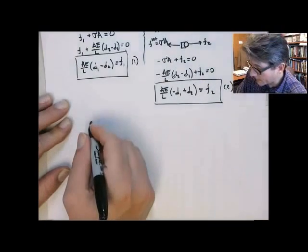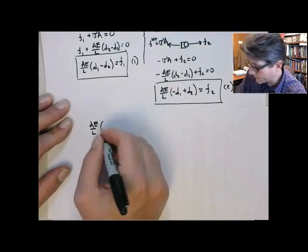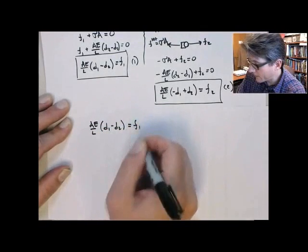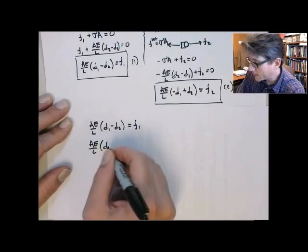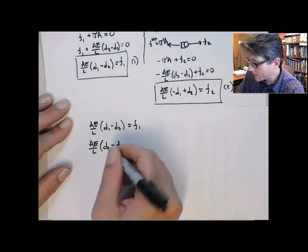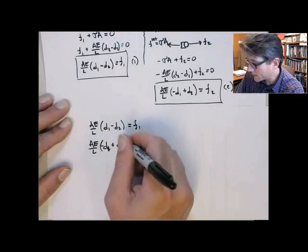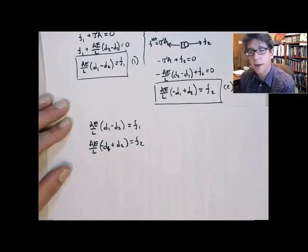We'll write them right on top of each other. So I got AE on L, D1 minus D2 is equal to F1, and AE on L, D2, I'm sorry, let's do minus D1 plus D2 equals F2. So I keep it in a consistent order, and you'll see why in a second.